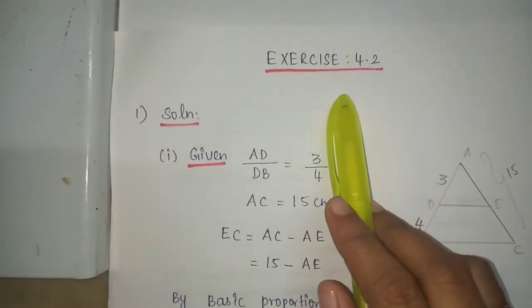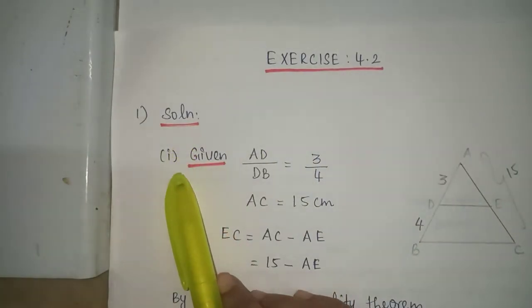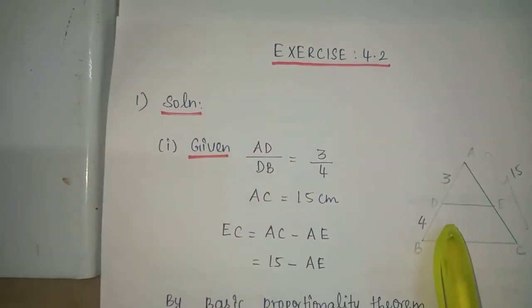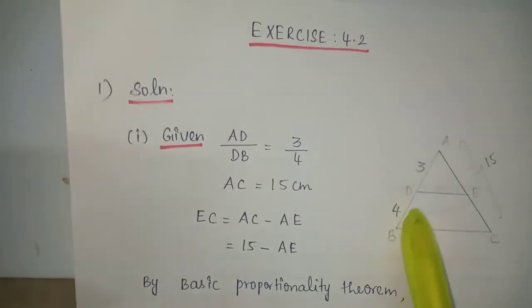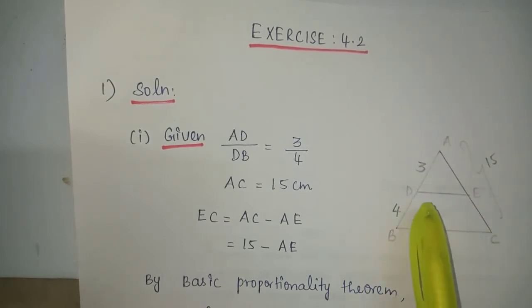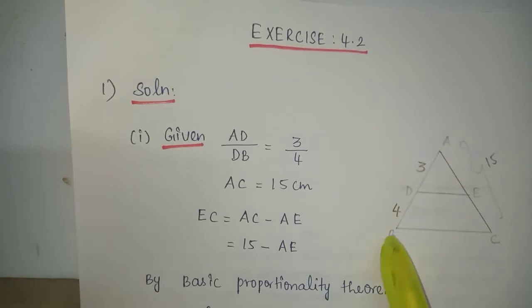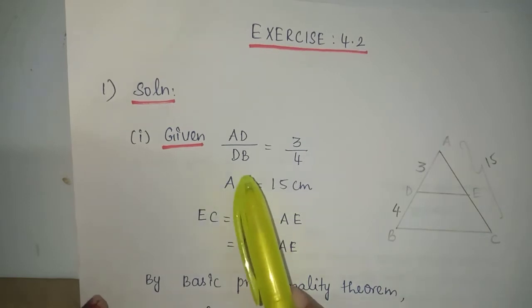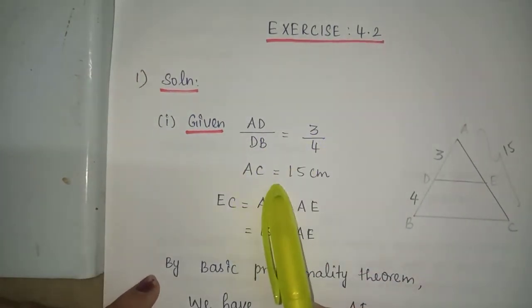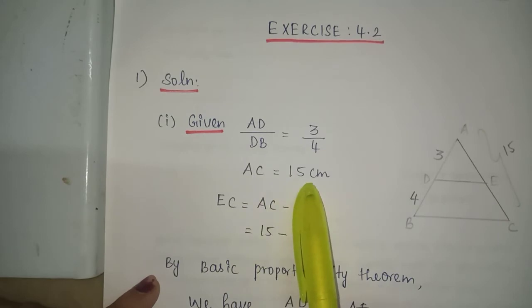Exercise 4.2, problem 1, first subdivision solution. In triangle ABC, DE is a line on sides AB and AC. Given that AD is 3 cm, DB is 4 cm and AC is 15 cm. So AD by DB is equal to 3 by 4, and AC is equal to 15 cm.